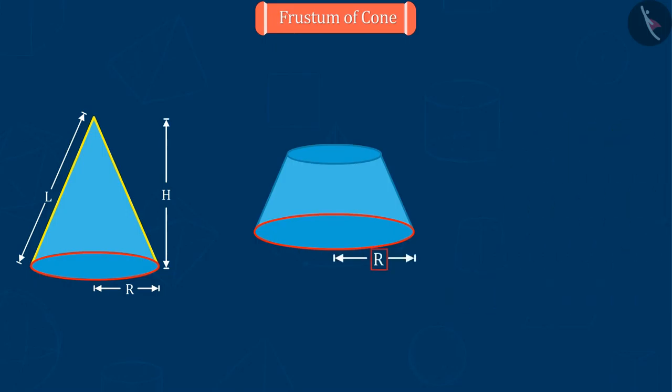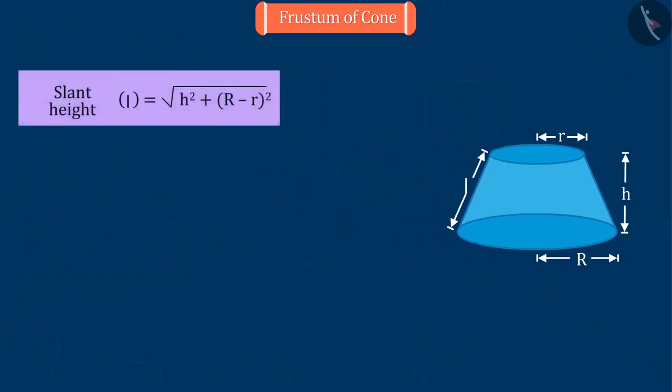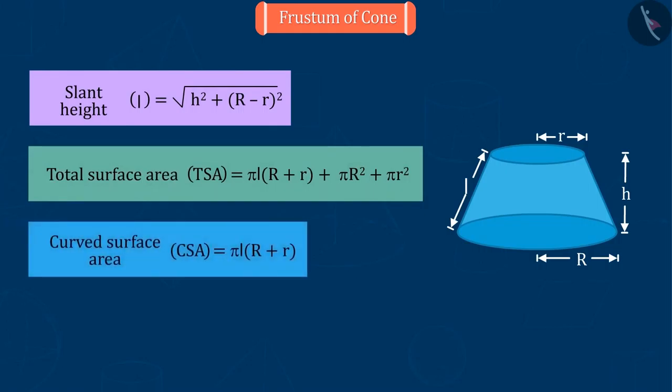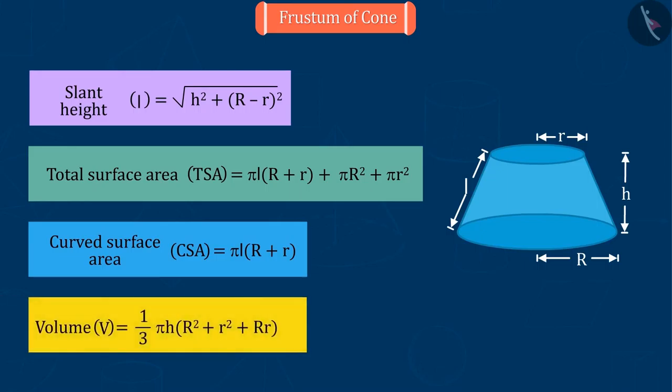If we represent the subtracted radius of the upper end as R, the height of the frustum as small h, the slant height as small l, then we can find out slant height, total surface area, curved surface area and volume of the frustum with the help of their formulas.